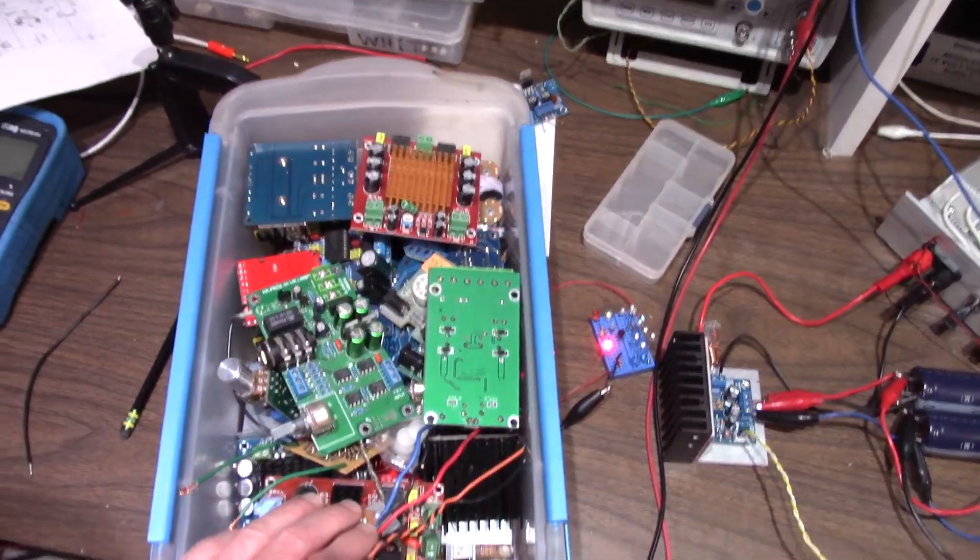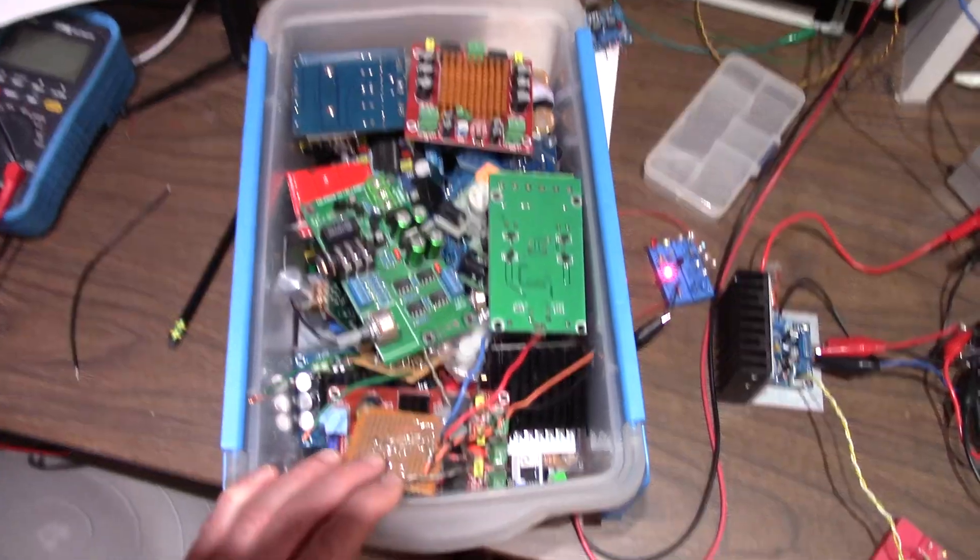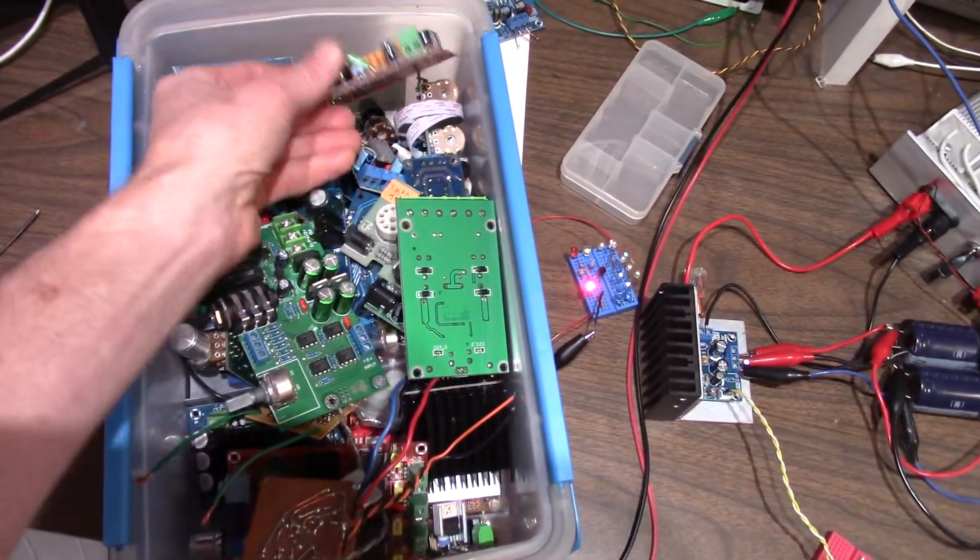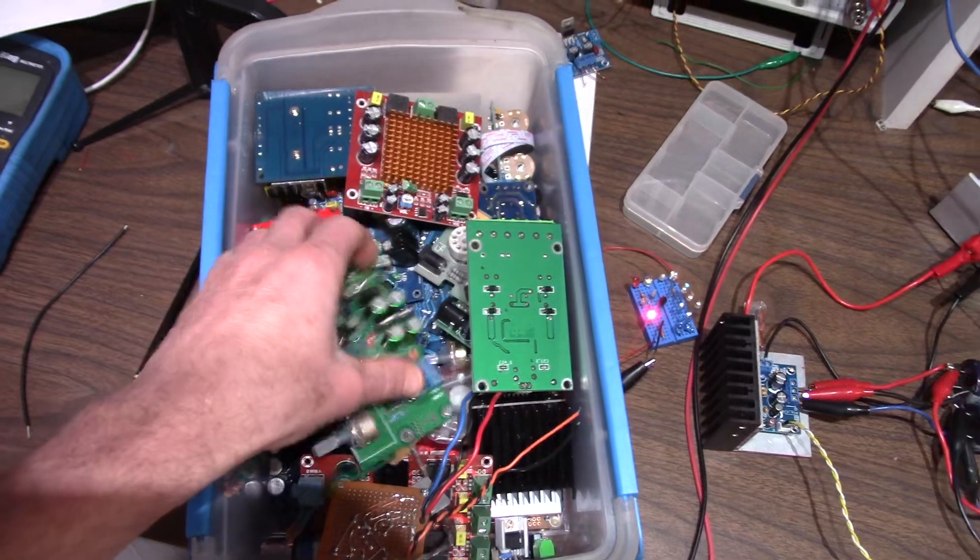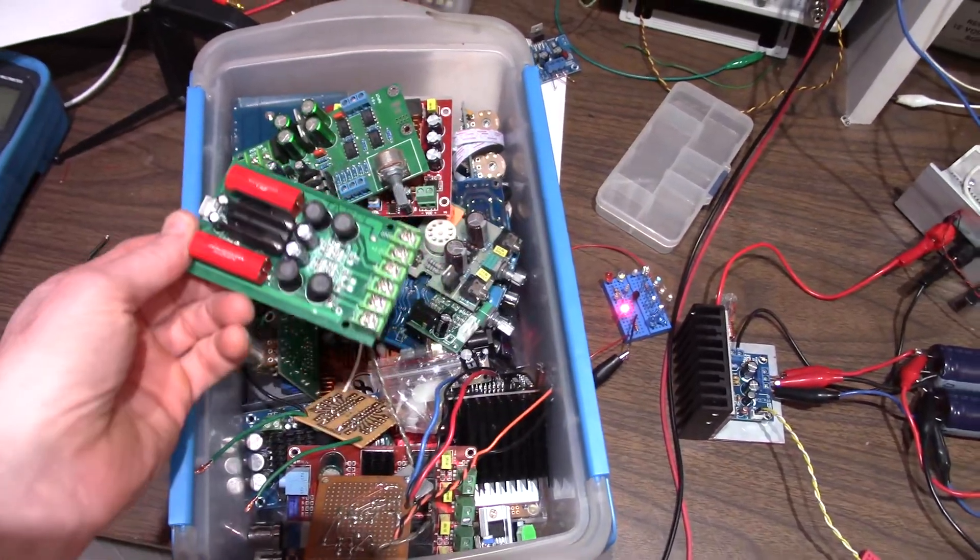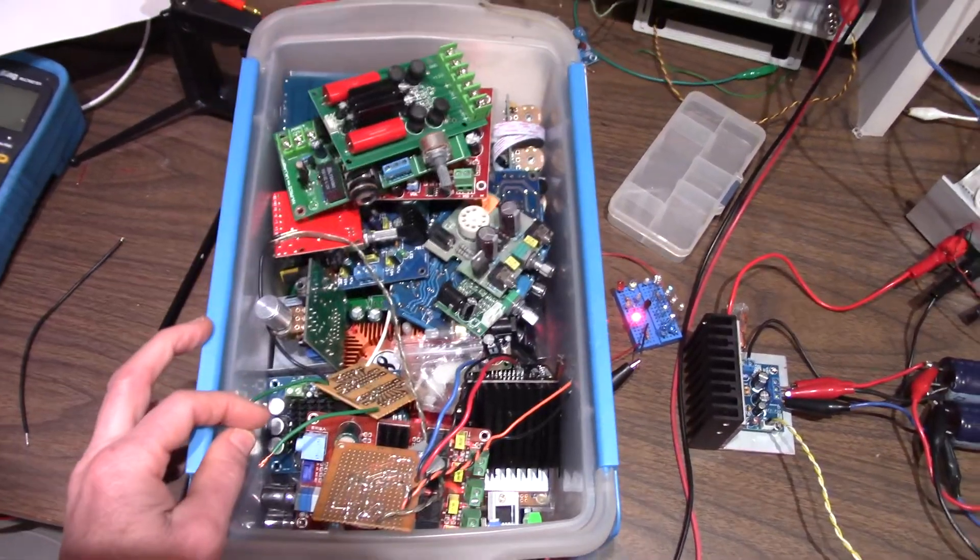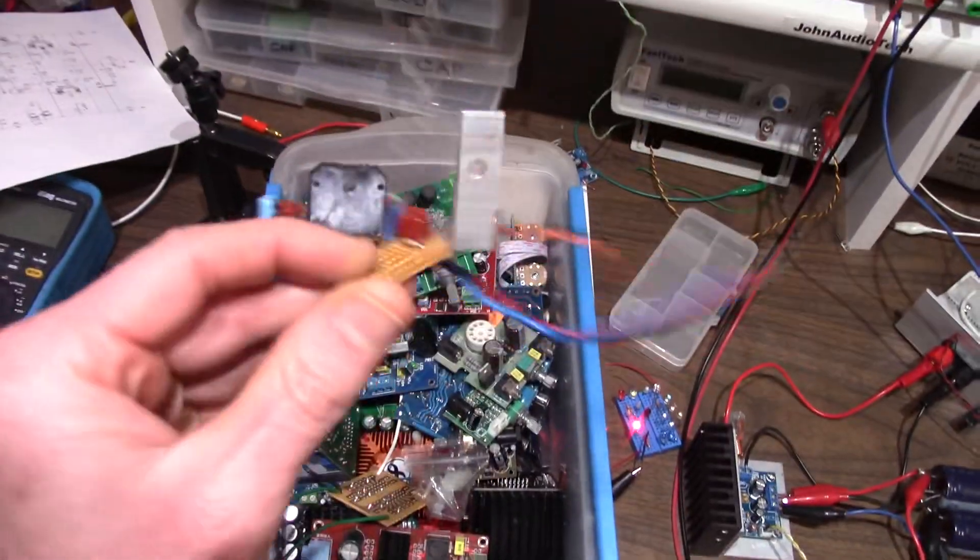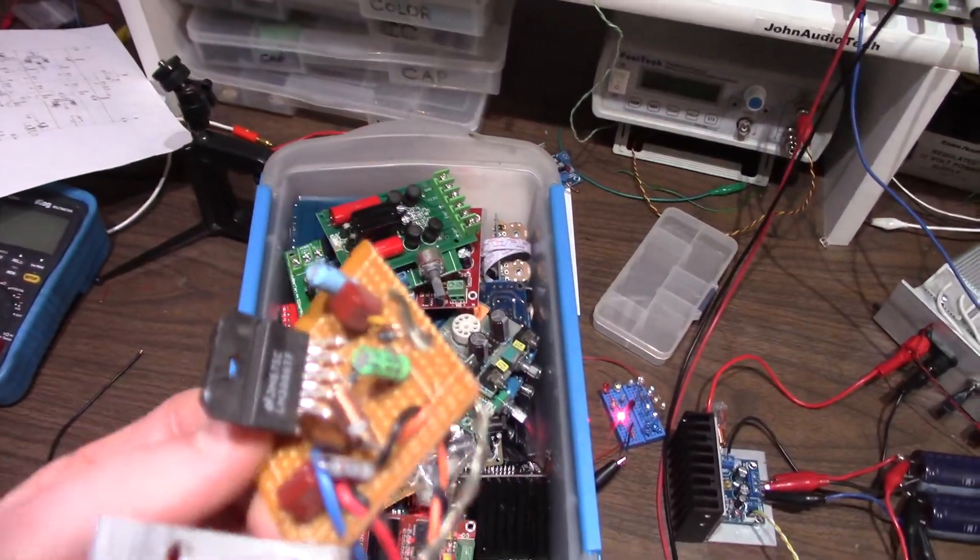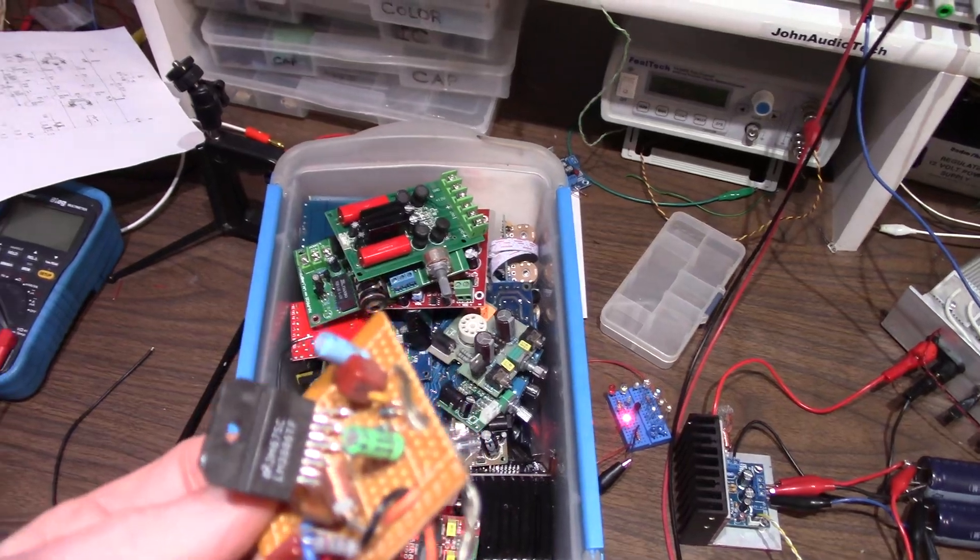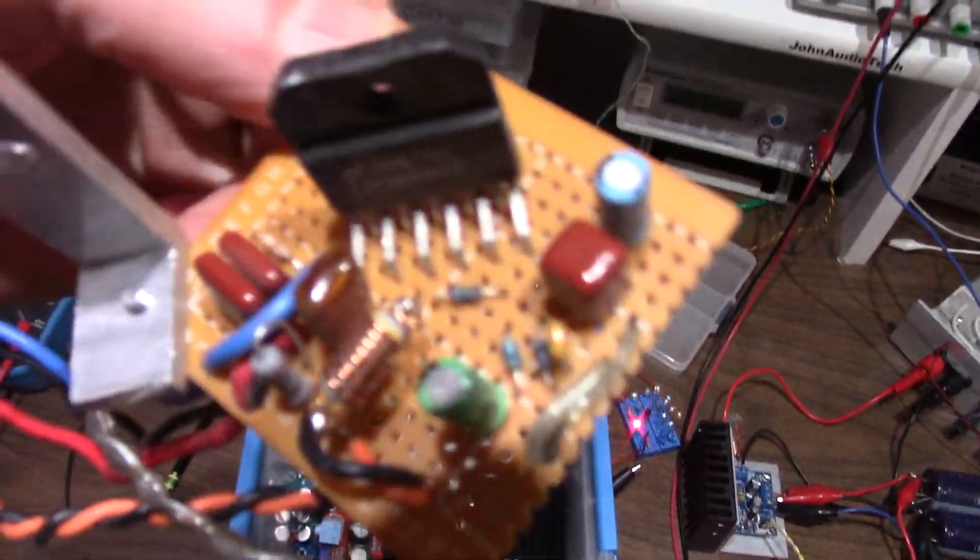I want to try one of these TPA 3116 boards. I think this is one here. I just want to check the distortion and frequency response. We know the frequency response has issues but I'm going to find out. I also want to do the LM3886 versus the TDA 7293.